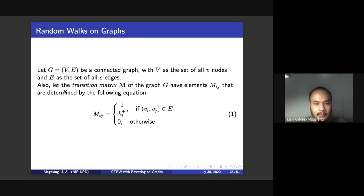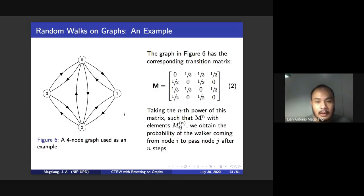So now we move on to our formulation of the problem. So we begin with a graph G. And from this graph G, we obtain a transition matrix capital M here. And this transition matrix is a matrix of probabilities given by this equation one here. It's dependent on the out degree of the node. We have this simple example here, a four node graph in figure six. This has the corresponding transition matrix in equation two.